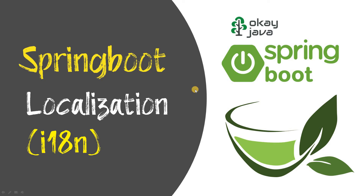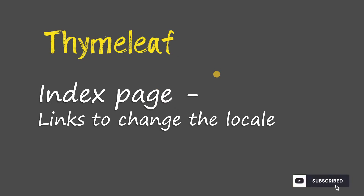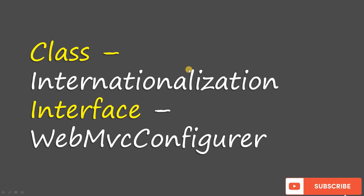For this video we are going to create multiple dot properties files. We'll create one messages.properties file, one messages_fr for French, and messages_es for Spanish. You can also create messages_de for German. We'll create an index page with links to change the locale — English, French, or Spanish. To make it work we'll create a Java class called Internationalization that implements the WebMvcConfigurator interface.